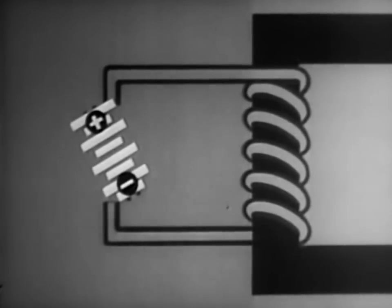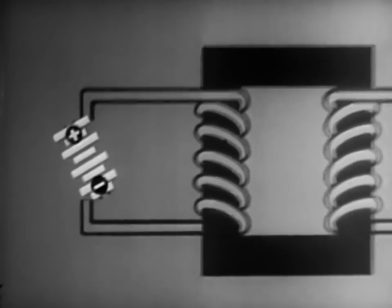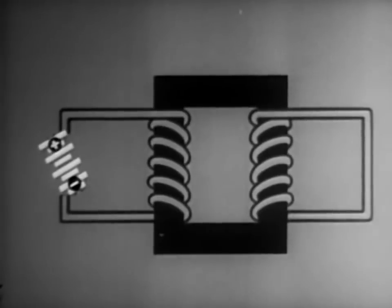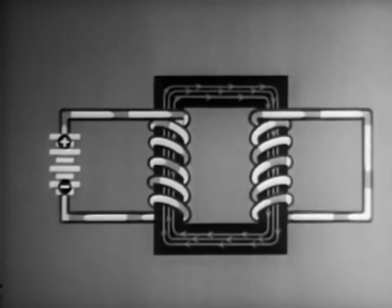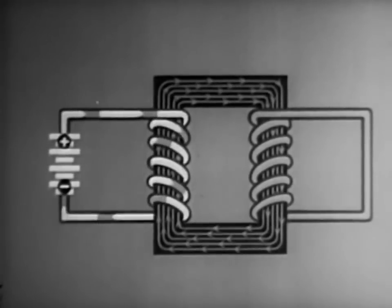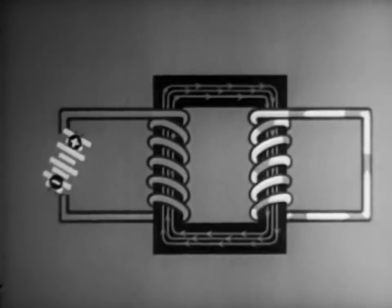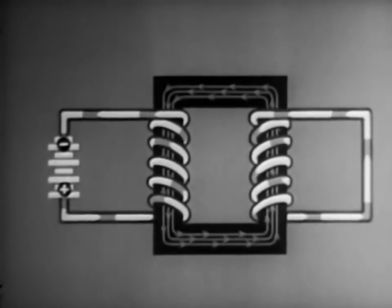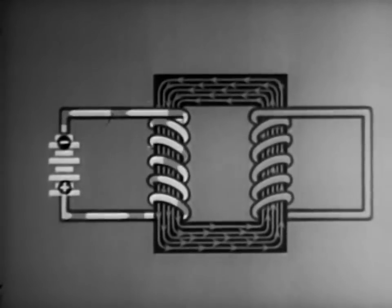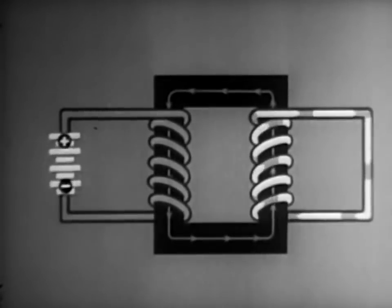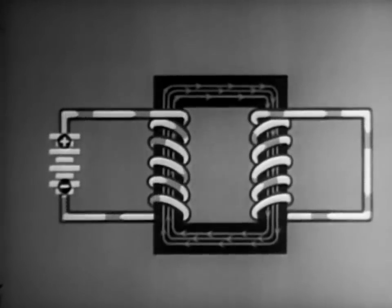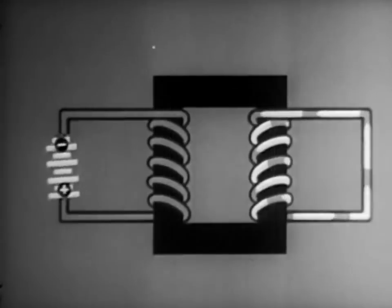Now, let's consider alternating current. We'll first give you an idea of how it works by sending direct current through the coil, first in one direction, then in the other. Notice that the induced current in the second winding reverses each time the supply current is reversed. Now, let's speed it up. The two currents begin to resemble each other.